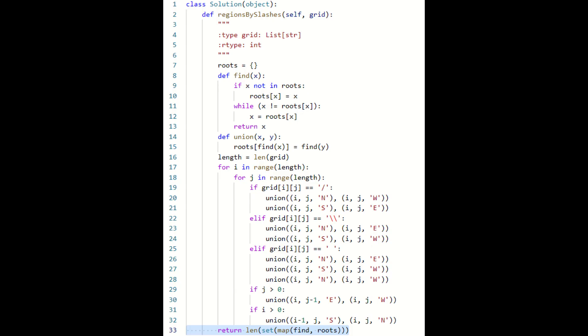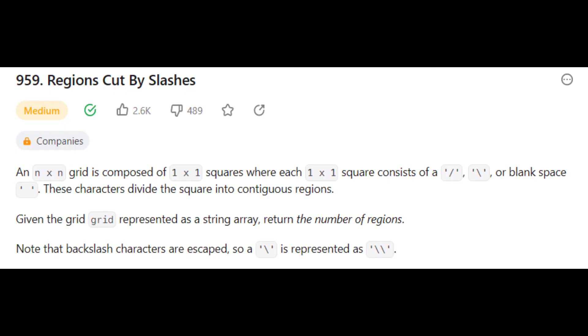To get an answer, we can count the number of distinct roots among all regions in the dictionary. This is done by mapping the find operation to all regions in the union find data structure, selecting their unique items with the set operation, and finding the length of the set.